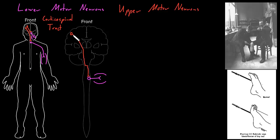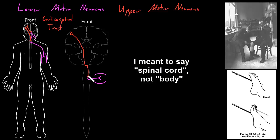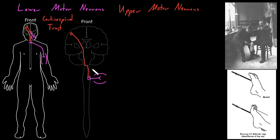A tract is a collection of axons traveling together through the central nervous system. Because most axons of the corticospinal tract travel down one side of the brain and then cross over to the other side of the body, dysfunction of these axons on one side of the spinal cord usually causes weakness of muscles on that same side. But dysfunction of the corticospinal tract on the other side of the brain — in the cerebral hemisphere or brain stem — usually causes weakness on the opposite side of the body. So the right side of the brain controls the left side of the body in terms of skeletal muscles, for the most part.